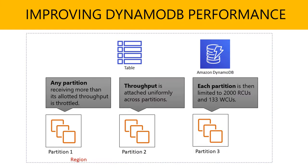You'll end up with three partitions, and your total throughput will be allocated evenly across those three partitions. For example, each partition would be limited to 2,000 read capacity units and approximately 133 write capacity units. The key thing to keep in mind is that if any one partition goes beyond what it's allotted, throughput will be a problem — even if your total throughput is lower than what you've provisioned.